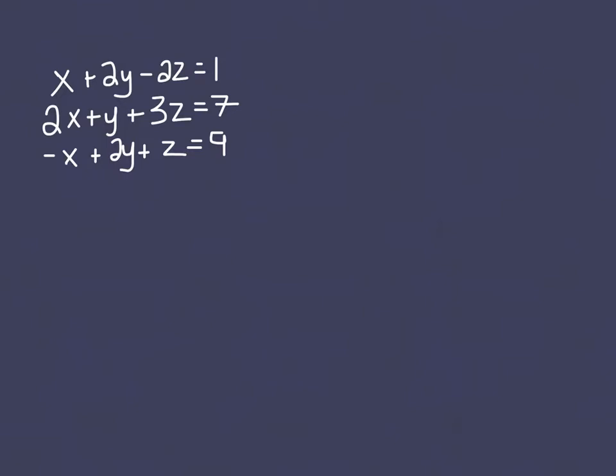Overall, what you want to do is choose one variable to eliminate. You will eliminate that variable in a set of two equations and a second set of two equations. Once you've done that, you will be left with only two variables and two equations, and you can solve using one of the methods you know.